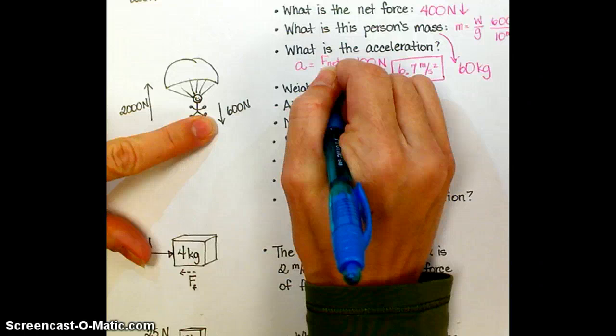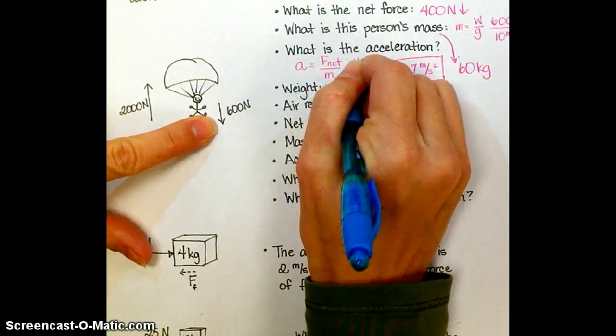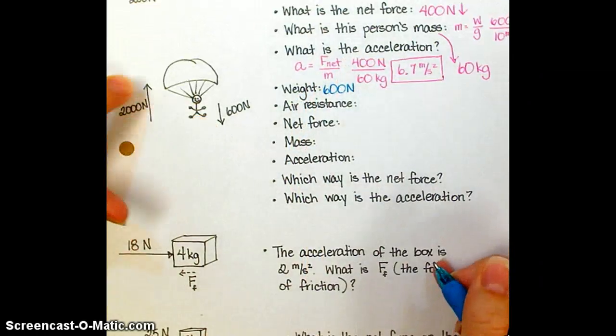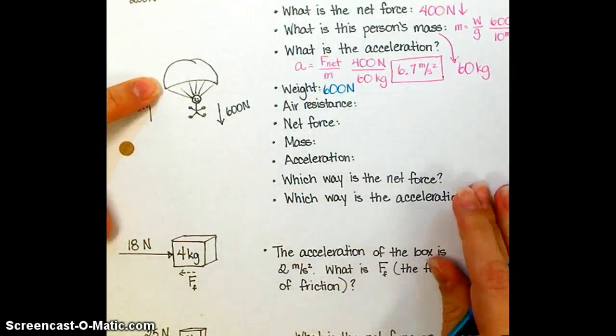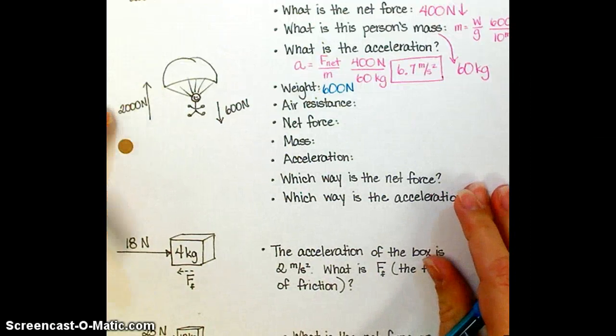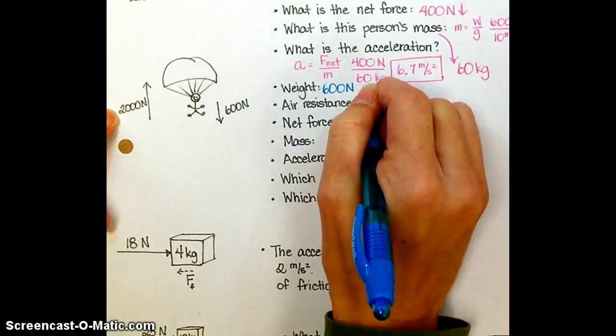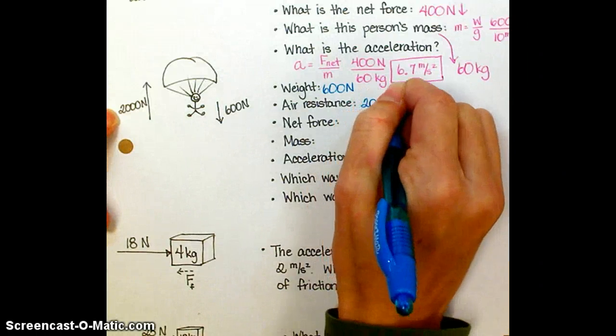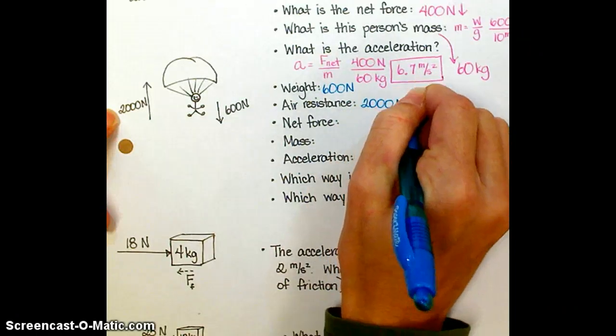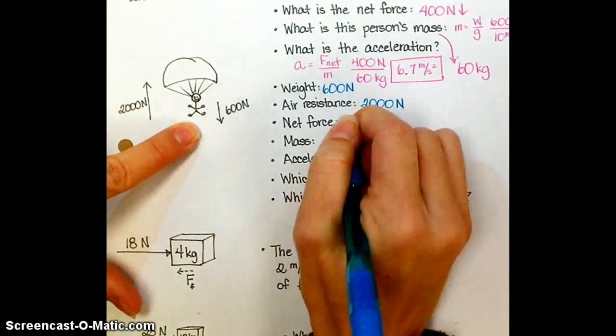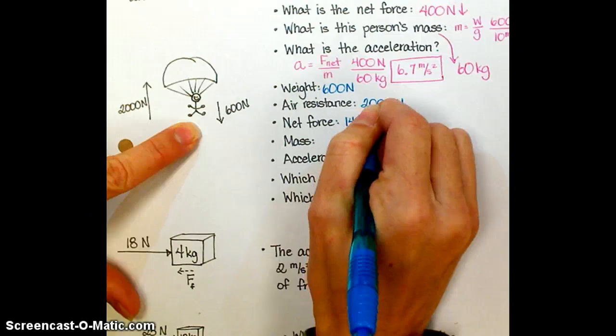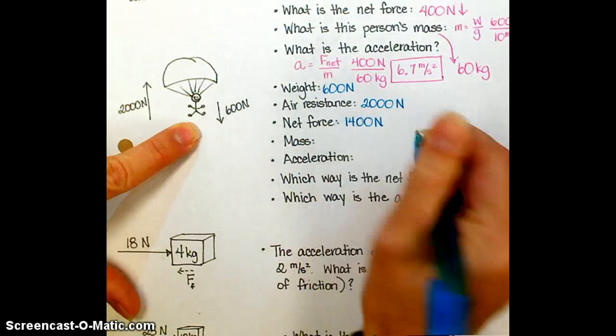Well, his weight is still 600 newtons. But this time, he has pulled his chute, and basically a parachute is a big old air catcher, and so our air resistance is going to increase tremendously to 2,000 newtons. And the net force this time is going to be 1,400 newtons, but it's going to be upward.